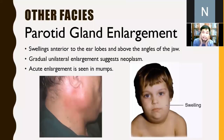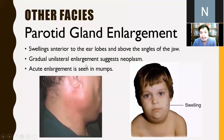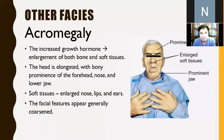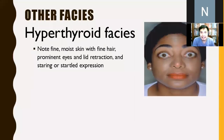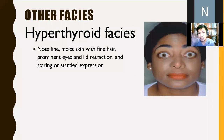Parotid gland enlargement — your parotid glands are in front of the ear at the angle of the mandible. Swelling can be unilateral or bilateral; gradual unilateral enlargement suggests neoplasm, while acute enlargement is seen in mumps. Acromegaly is due to increased growth hormone, causing enlargement of bones and soft tissues including the nose, lips, and ears. In hyperthyroidism, note fine moist skin with fine hair and exophthalmos — bulging of the eyes due to increased thyroid hormone pushing the eyes outward.